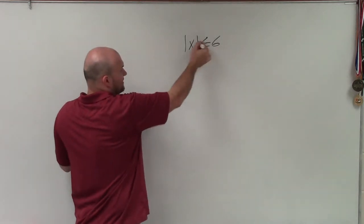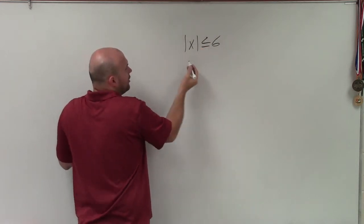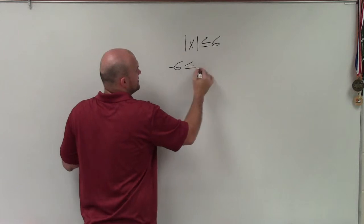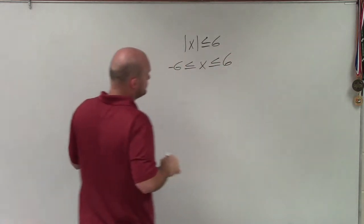So to do this, when I have less than or equal to, then all I'm simply going to do right in my compound inequality is I'm going to write negative 6 is less than or equal to x, which is less than or equal to 6.